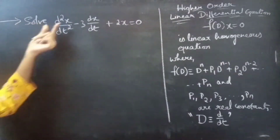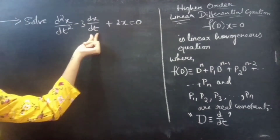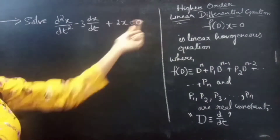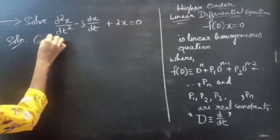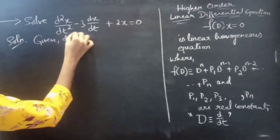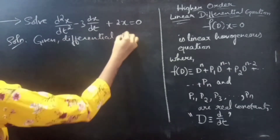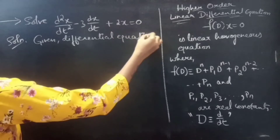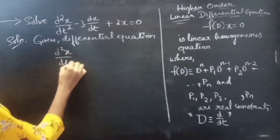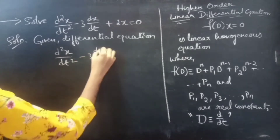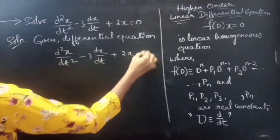Problem. Solve: d²x/dt² minus 3 times dx/dt plus 2x equals 0. Solution. Given differential equation: d²x/dt² minus 3 dx/dt plus 2x equals 0.